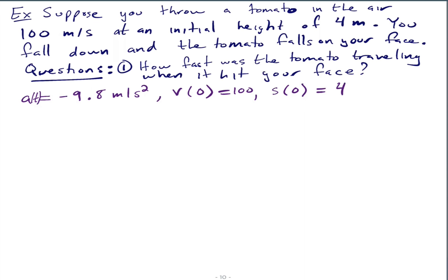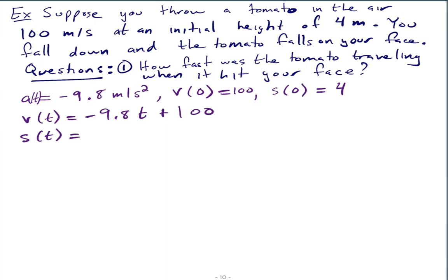That's all we need. From this we can find the velocity function: v(t) = −9.8t + c. Plugging in v(0) = 100, we get c = 100, so v(t) = −9.8t + 100. And then the position function is s(t) = −4.9t² + 100t + c. Plugging in s(0) = 4, we get s(t) = −4.9t² + 100t + 4.